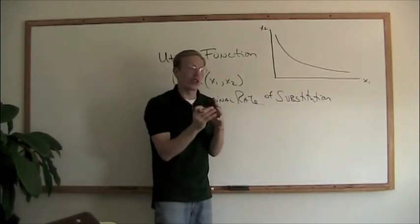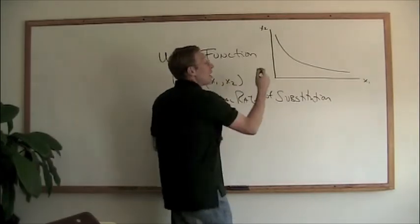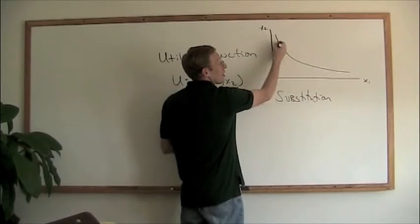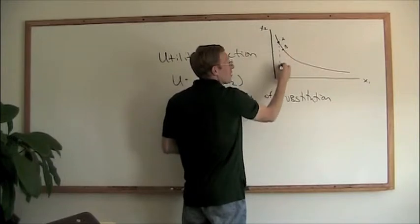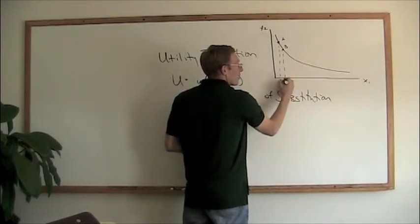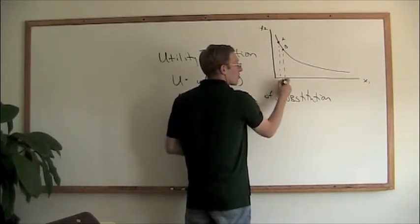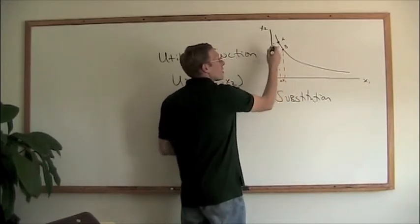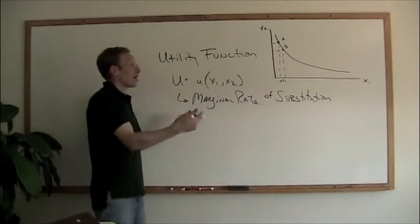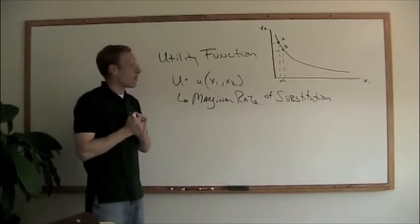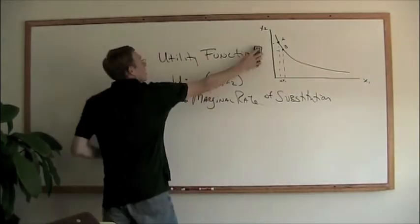We're now making the connection where utility or happiness is reflected by the indifference curve. The marginal rate of substitution tells us the trade-off when going from point A to point B. If we're increasing x1 by one unit, how much x2 do we have to give up? That's the marginal rate of substitution. Let's combine this mathematically to see where utility and the MRS come into play.